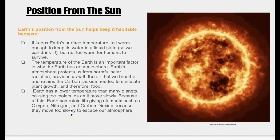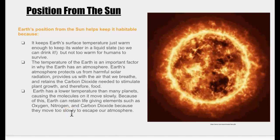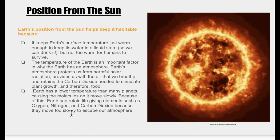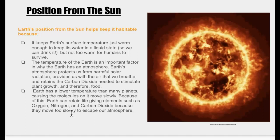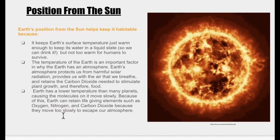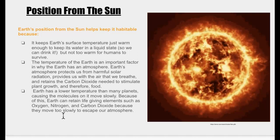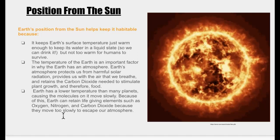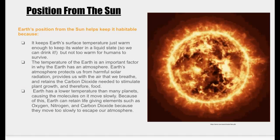Earth has lower temperatures than many planets, and this causes the molecules on it to move relatively slowly. Because of this, Earth can retain life-giving elements such as oxygen, nitrogen, and carbon dioxide because they move too slowly to escape our atmosphere.